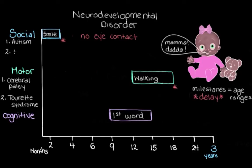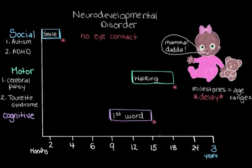Another disorder we can put down as a social or behavioral disorder is ADHD. Someone with ADHD has trouble focusing on particular tasks for too long, and sometimes they struggle with being hyperactive or restless. Even though we put ADHD here as more of a behavioral disorder, kids with ADHD often also have language impairments. So if our child here wasn't saying their first word around about this age range, we might start to consider ADHD as a possible underlying neurodevelopmental disorder.